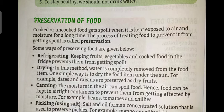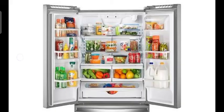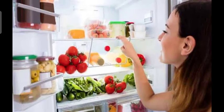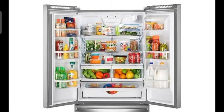There are some ways by which we can preserve foods. The first one is refrigerating. Refrigerating means keeping the fruits, vegetables, and cooked food in the fridge, and it prevents them from getting spoiled. We keep our food in the fridge so that it does not spoil. That is called refrigerating.